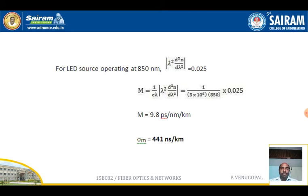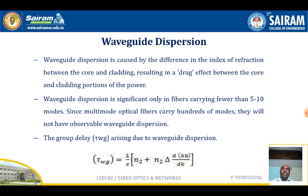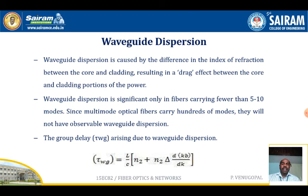Waveguide dispersion is caused by the difference in the index of refraction between the core and cladding, resulting in a drag effect between the core and cladding portions of the power. Waveguide dispersion is significant only in fibers carrying fewer than 5 to 10 modes. The group delay arising due to waveguide dispersion is given by: d(omega_g) = (L/c) × [n₂ + n₂ × delta × d(kb)/dk].